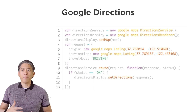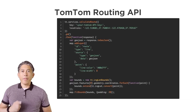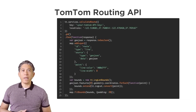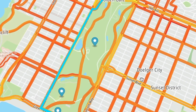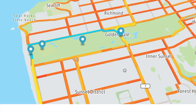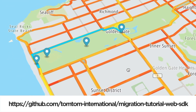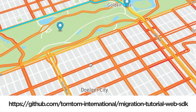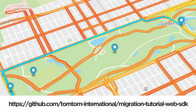Here is a quick example of how you probably use the Google Directions API to create a route, and this is how you would use the TomTom Routing API to create a route and display it on the map. Here is the example of the final route displayed on the map. You can always get a copy of the code used for this demo in this GitHub repository.